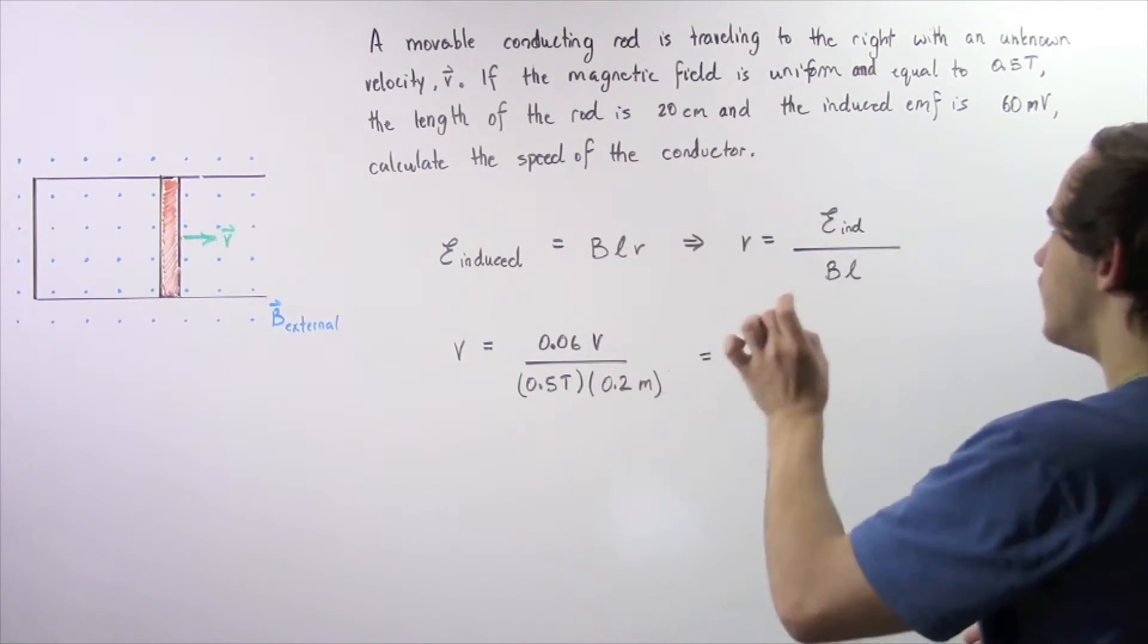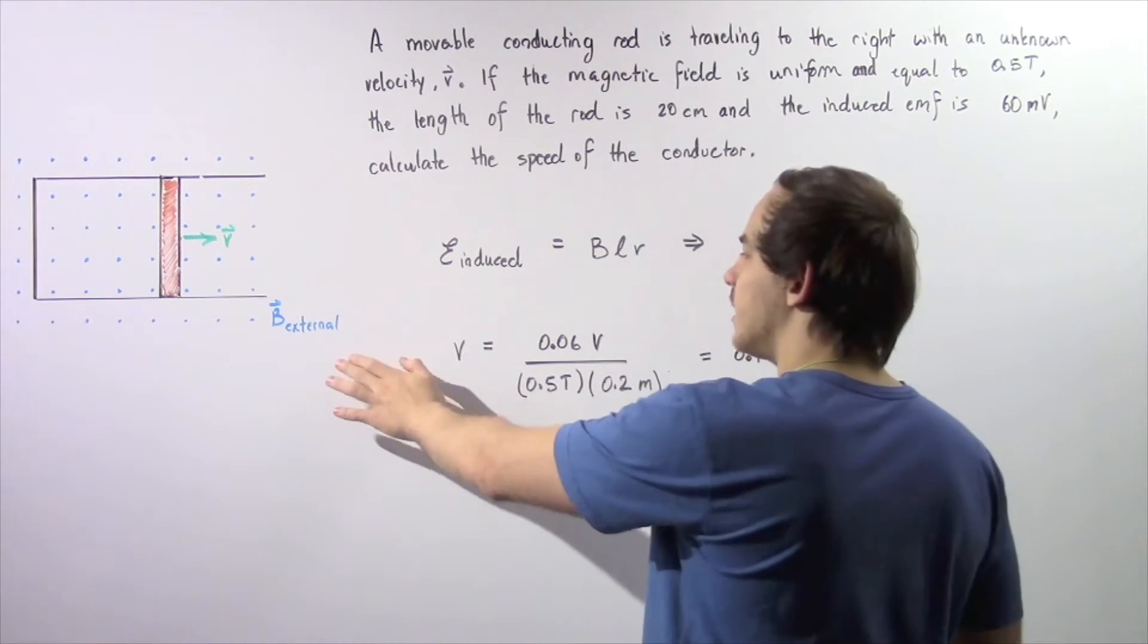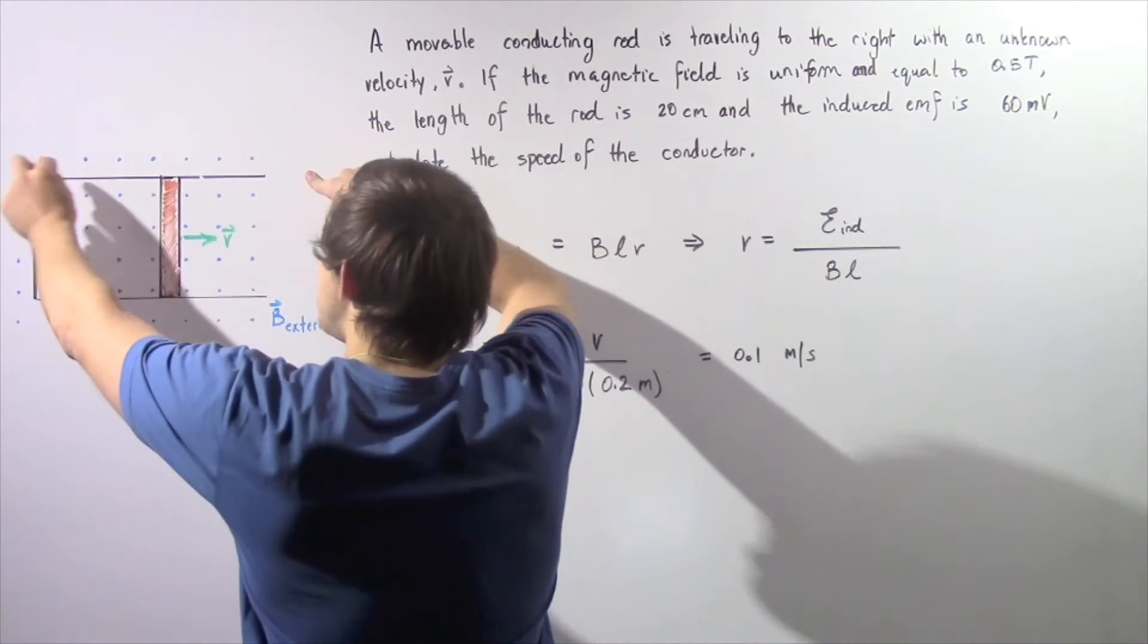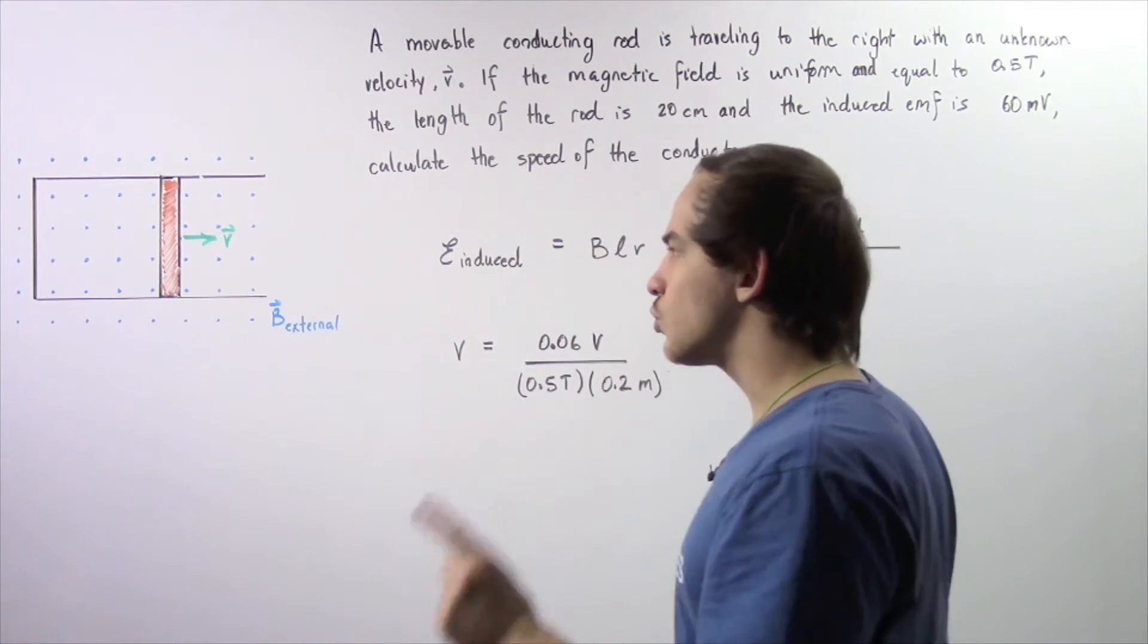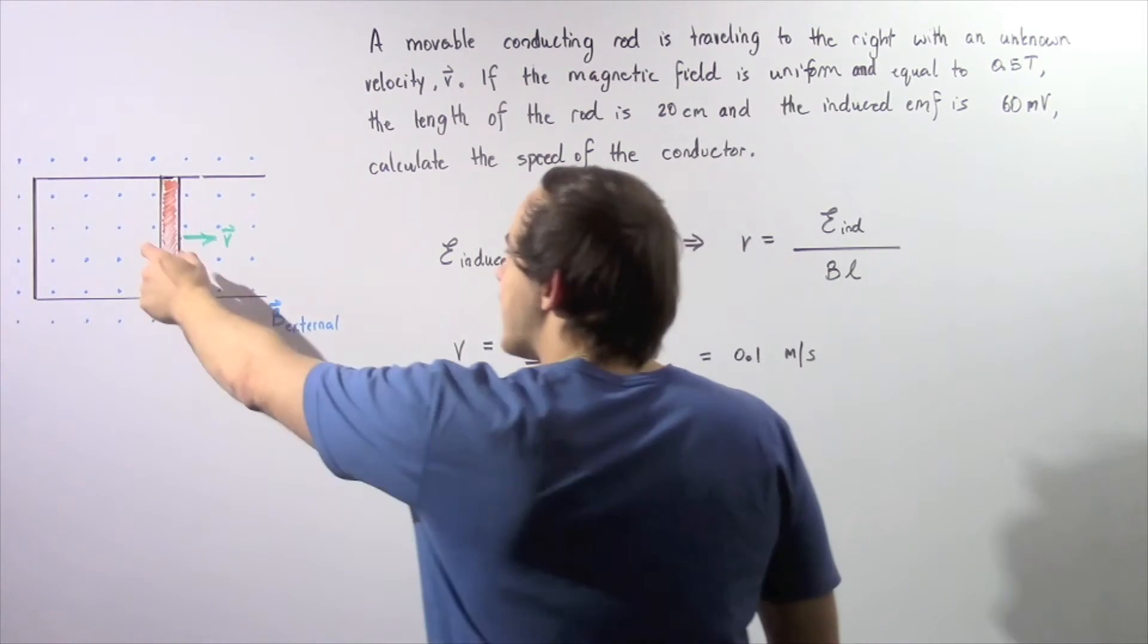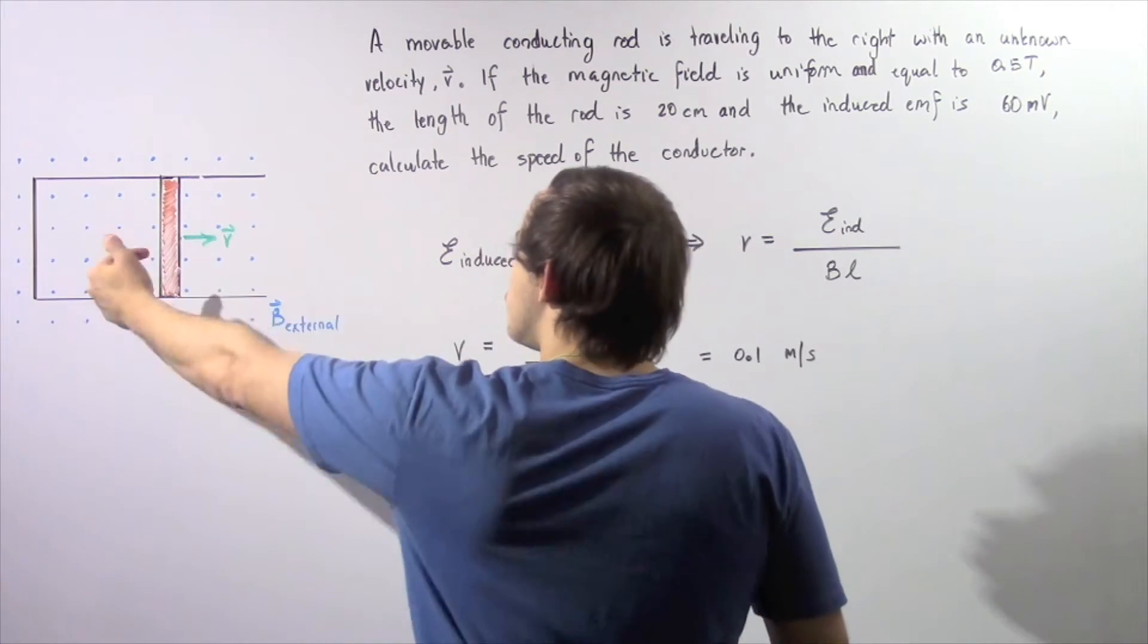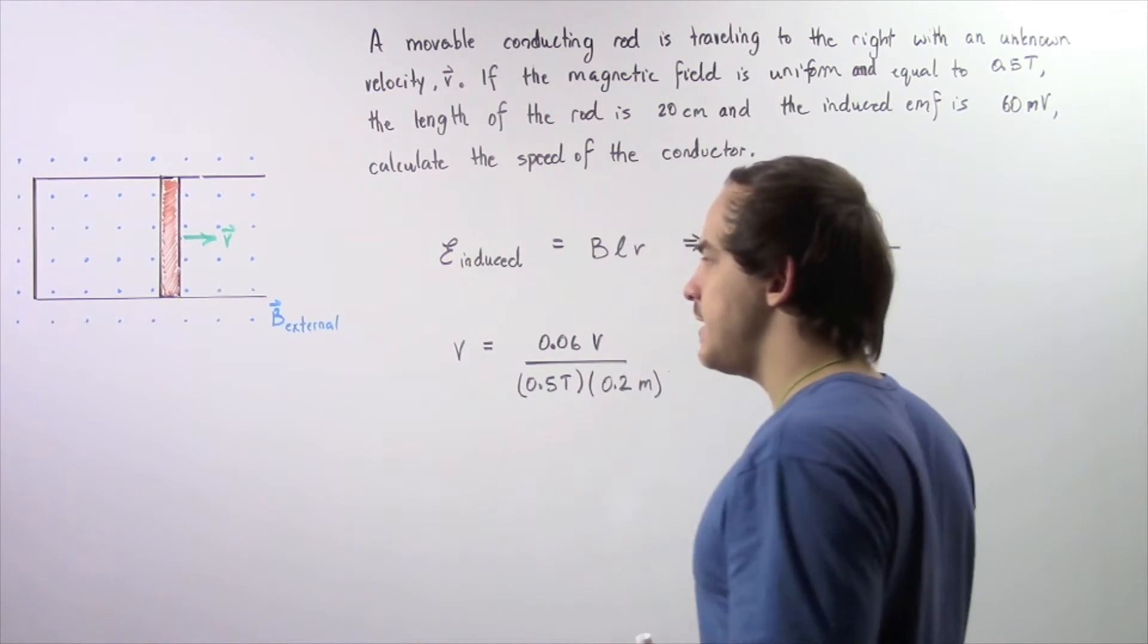A movable conducting rod is traveling to the right with an unknown velocity V as shown in the following diagram. We have a U-shaped conducting wire and we place a conducting rod onto our U-shaped conducting wire. This rod moves to the right along the X axis with some unknown velocity V.